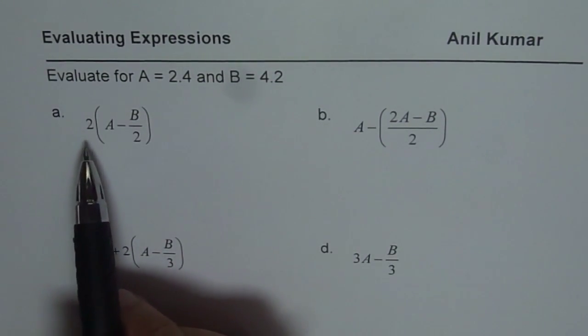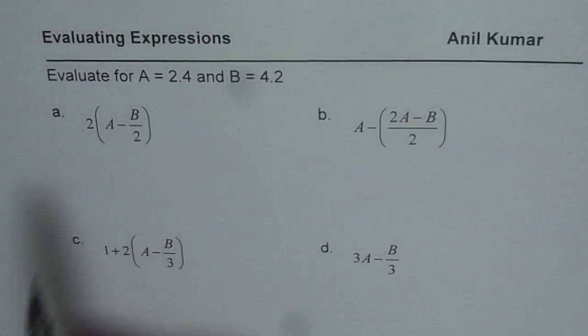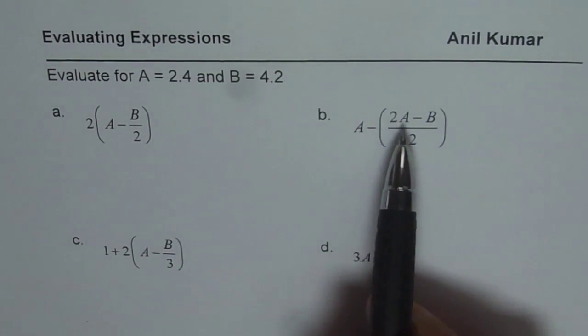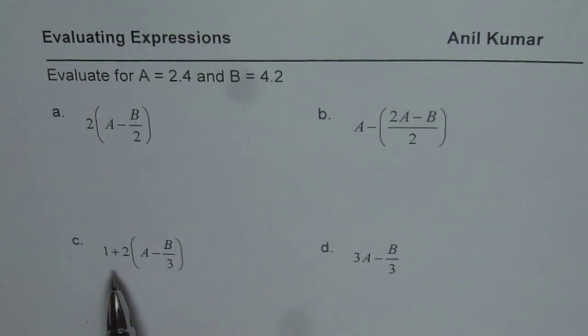The first one here is 2 times A minus B over 2. The second one is A minus 2A minus B over 2. The third one is 1 plus 2 times A minus B over 3. And the last is 3A minus B over 3.